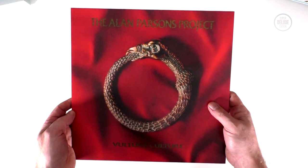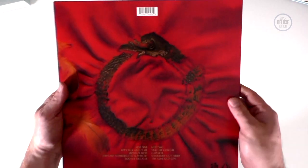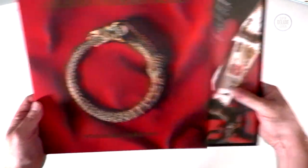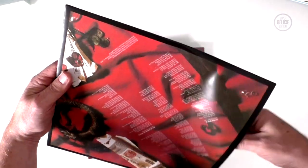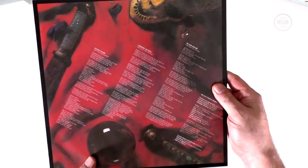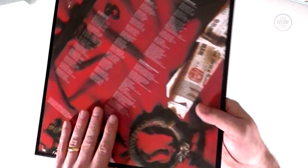Vulture Culture from 1985. Kind of quite an 80s sort of cover really isn't it. Another printed inner sleeve here. Lyrics on one side. In fact lyrics on both sides of the printed inner.